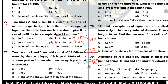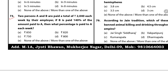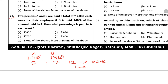Question 73: Two persons A and B are paid a total of 2,040 each week. If B is paid 140% of the amount paid to A, then suppose A = 100, B = 140; ratio is 5:7. Total = 12 parts = 2,040; one part = 170. A's share = 5 × 170 = 850. So A is paid 850.